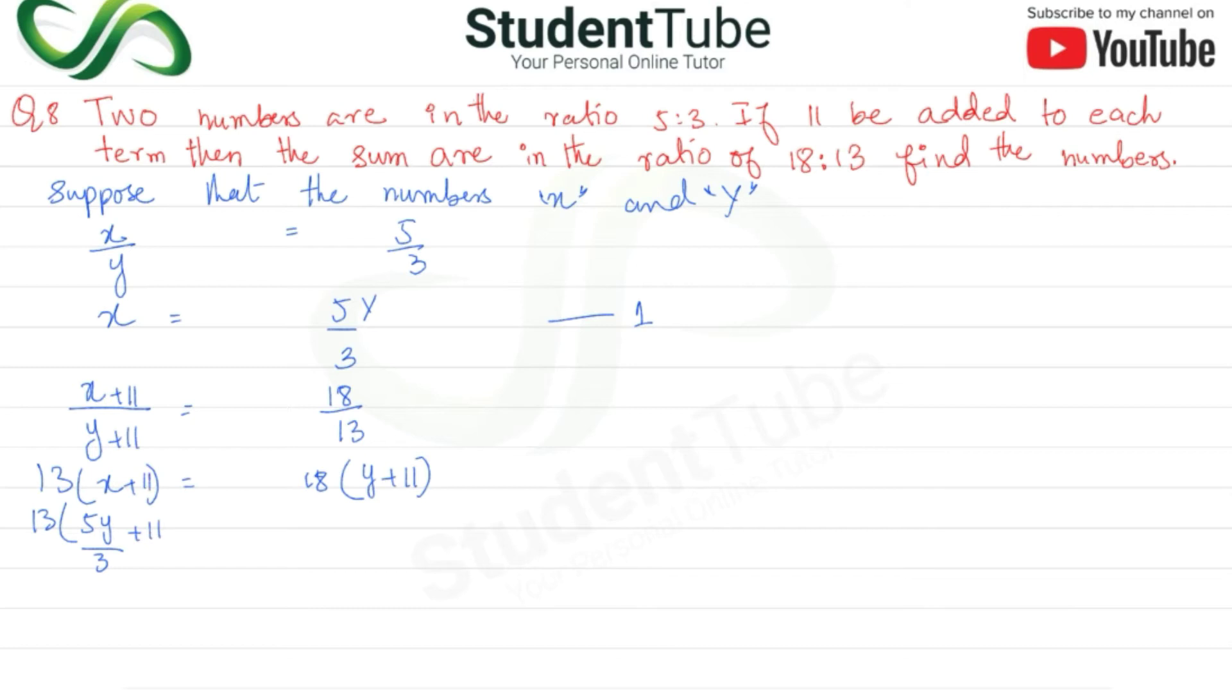This is 13. 429 is equal to 18y plus 198. Okay? 65y plus 429 is equal to... Here we go.